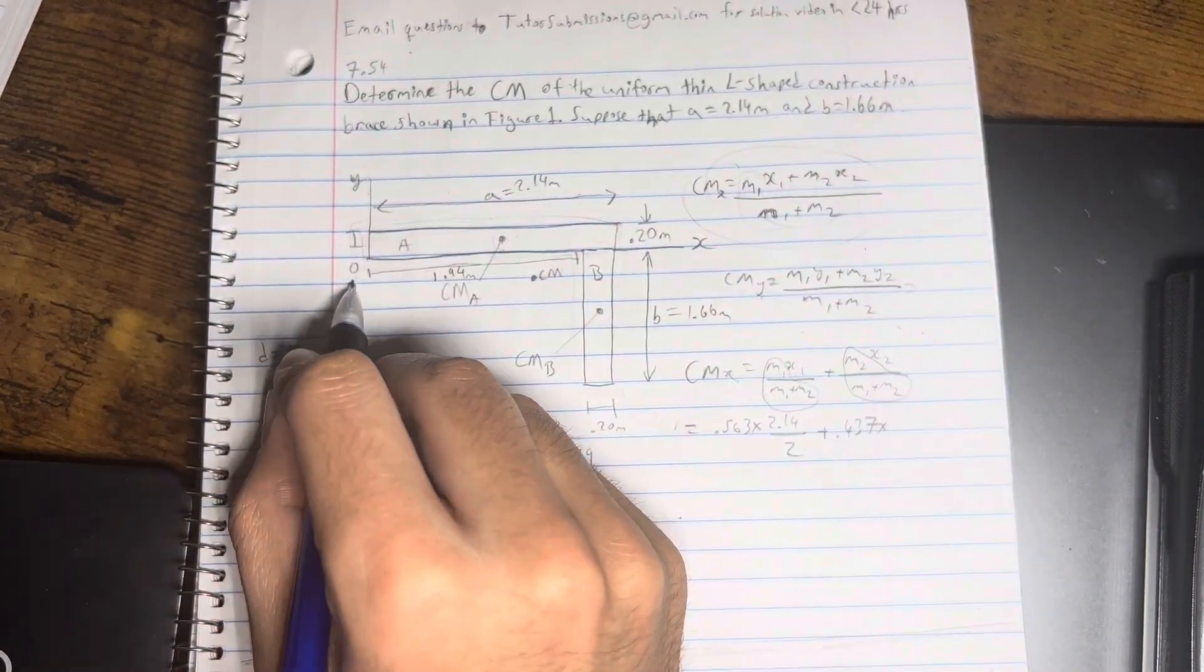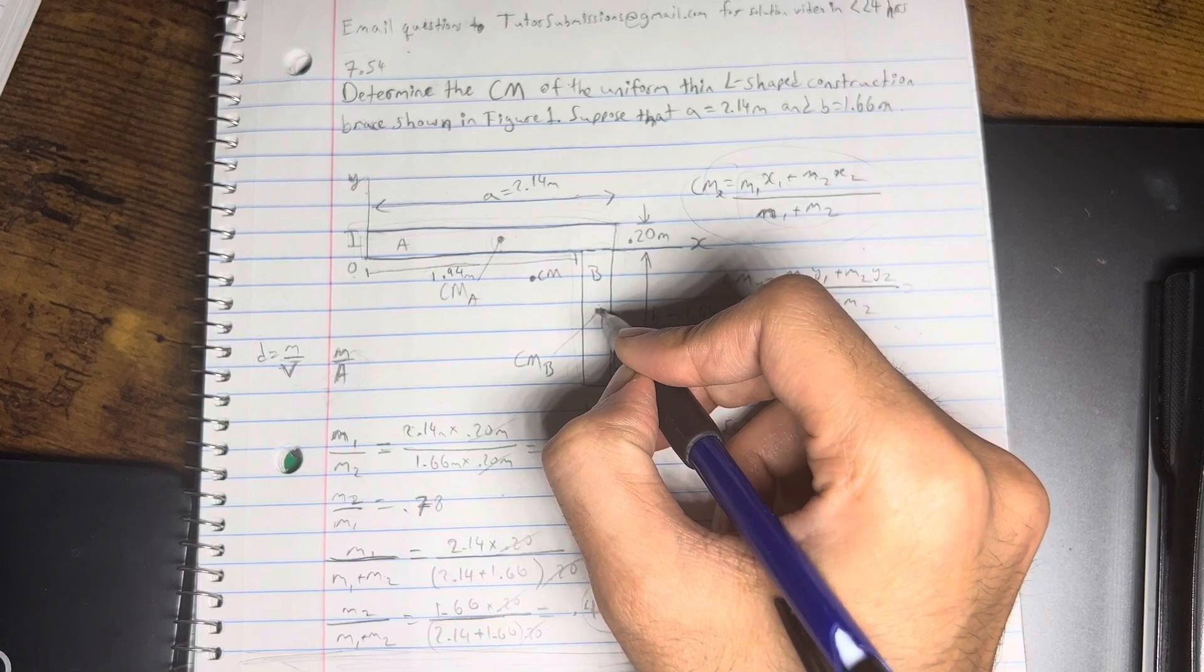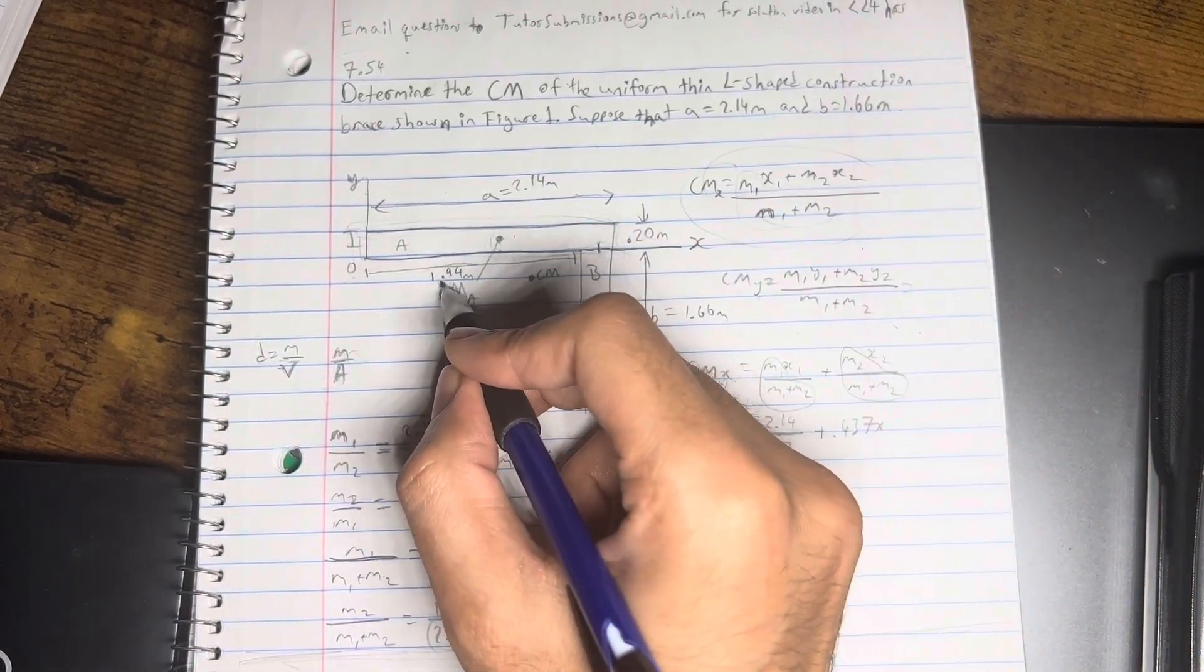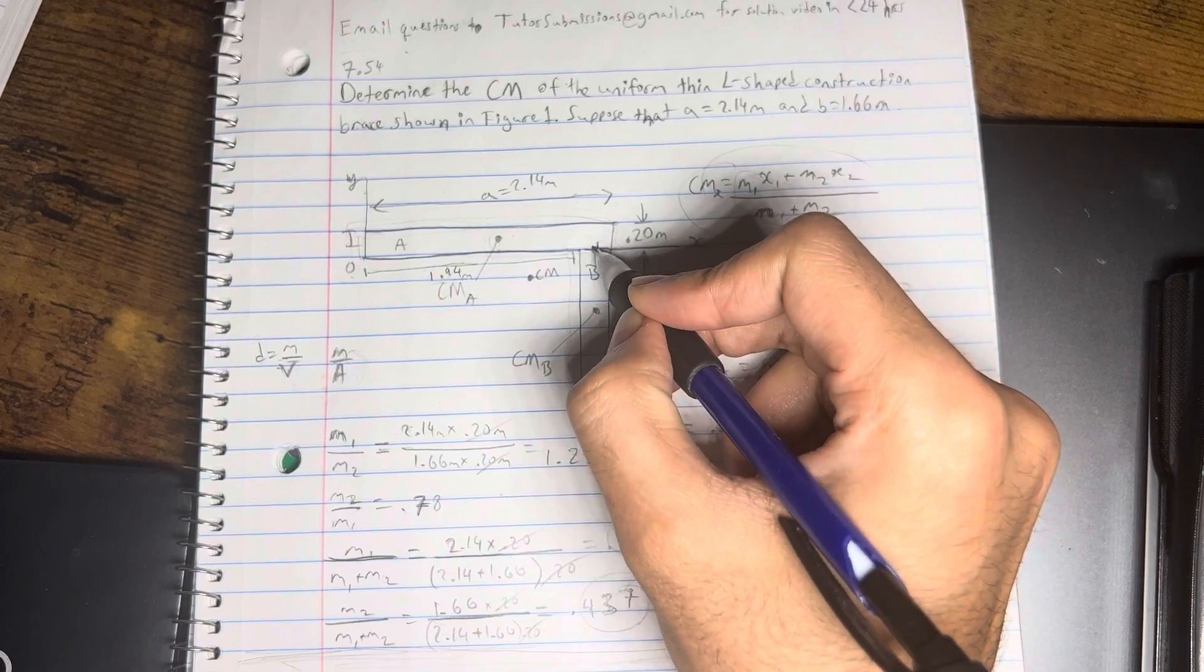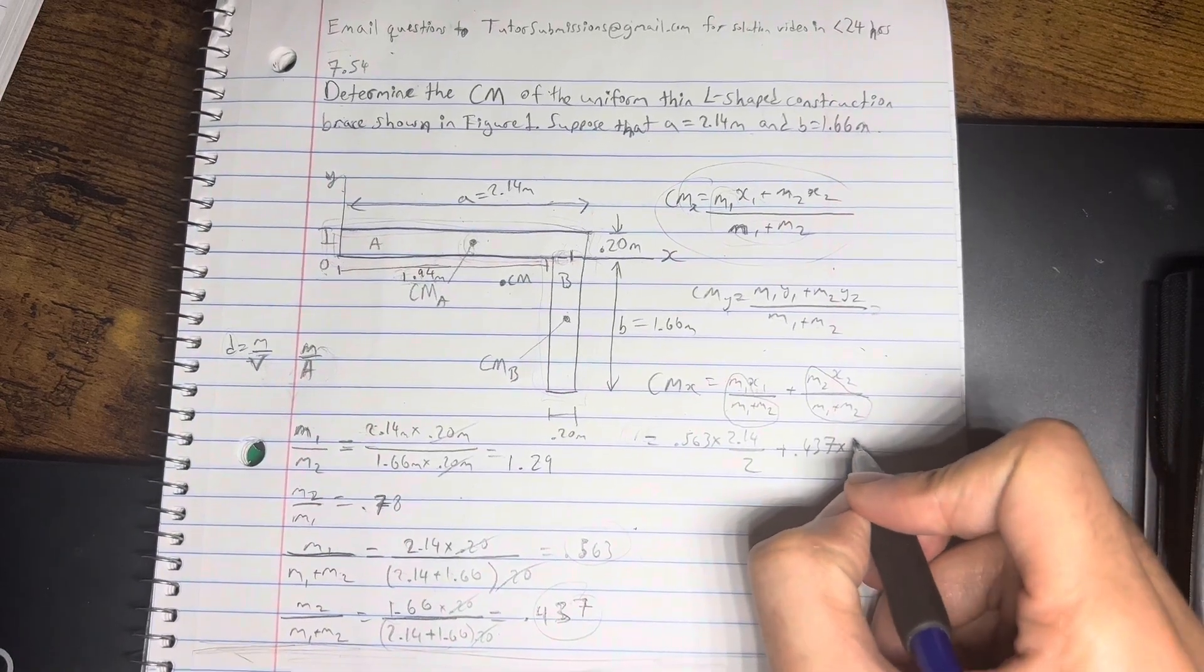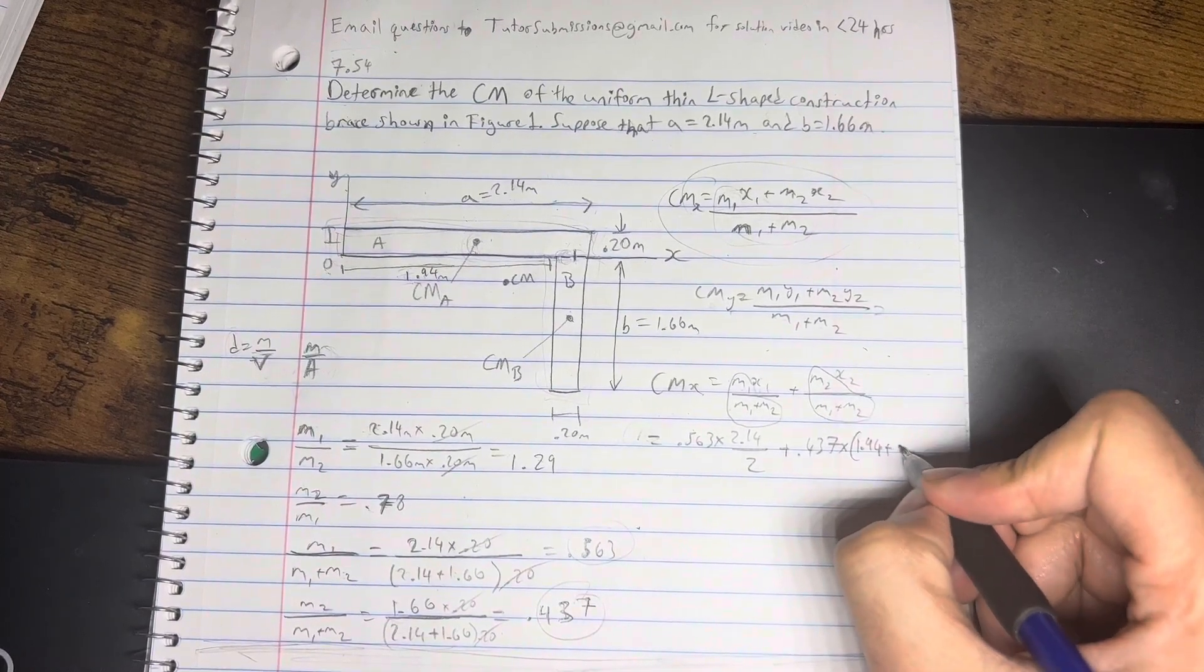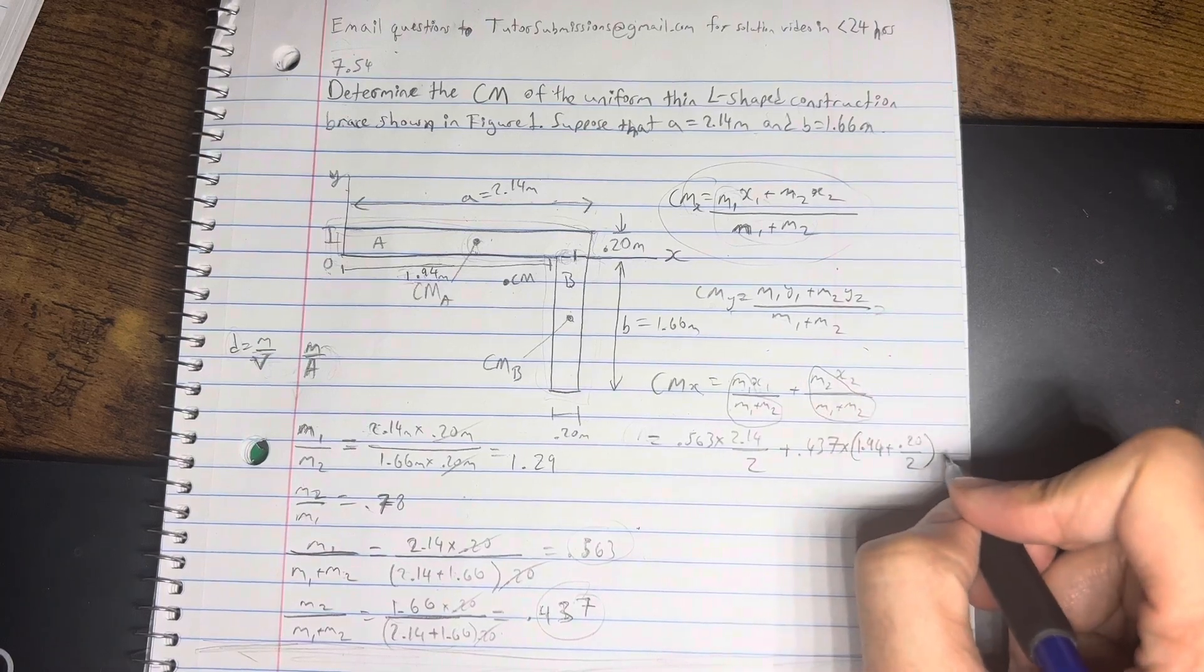So, the x-coordinate is going to be right here. So, the way we find this is going to be this length that I found from earlier, 1.94, plus 0.2 divided by 2, which will give us this little sliver over here. So, I'm going to write that over here. Times 1.94 plus 0.20 over 2. And that should give us the x-coordinate for that. I'm going to calculate that really quickly.